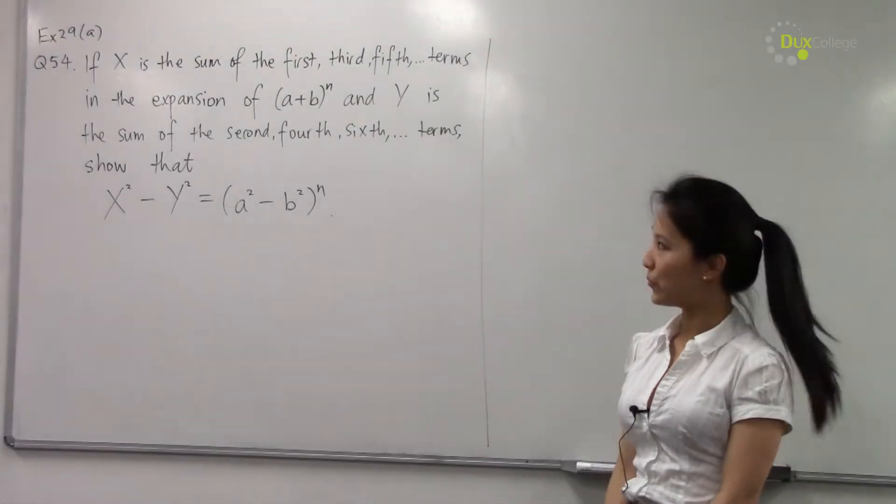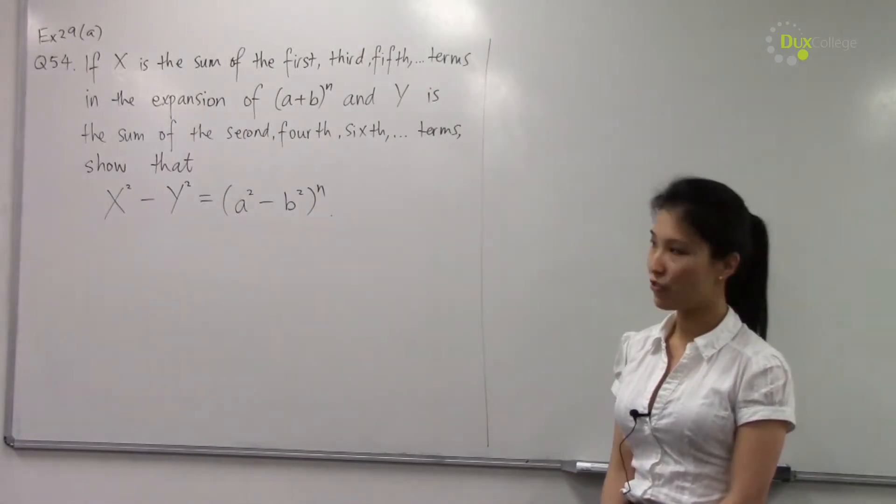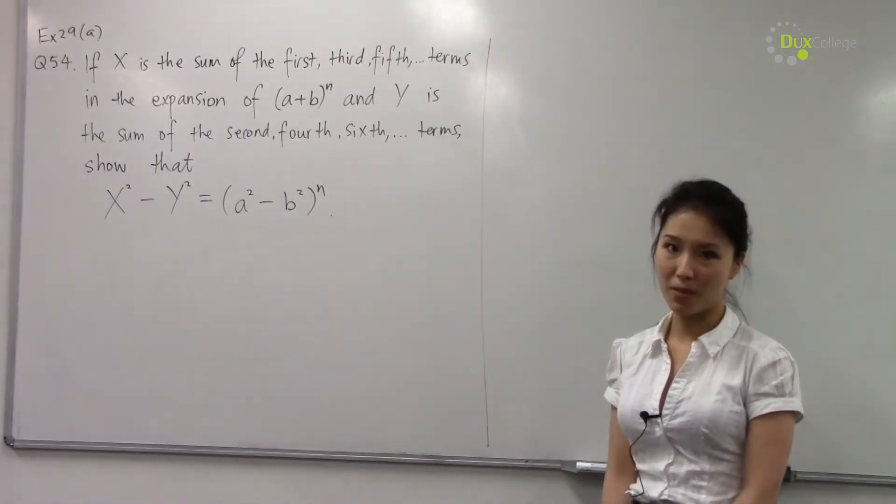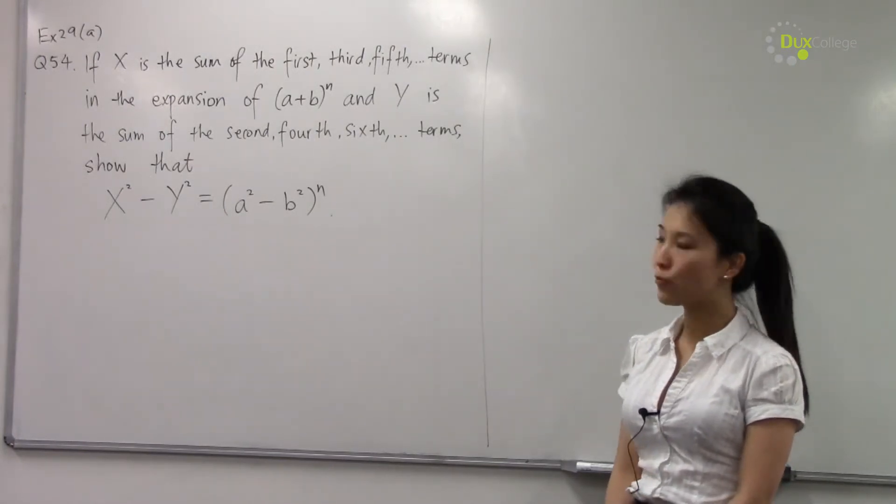Now let's look at Question 54. If X is the sum of the first, third, fifth, etc. terms in the expansion of (a+b)^n, and Y is the sum of the second, fourth terms...